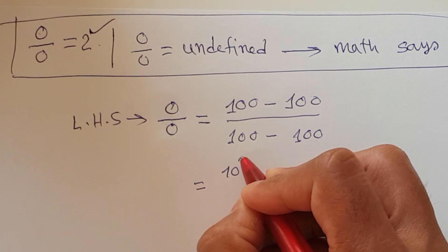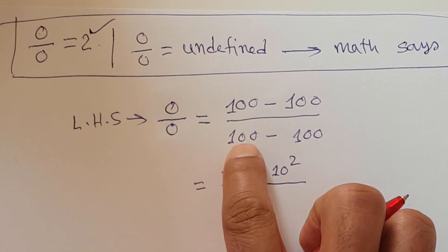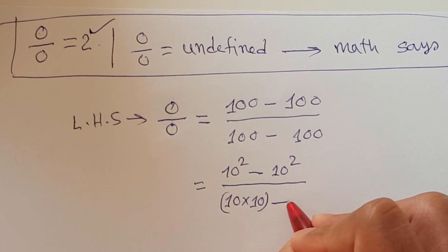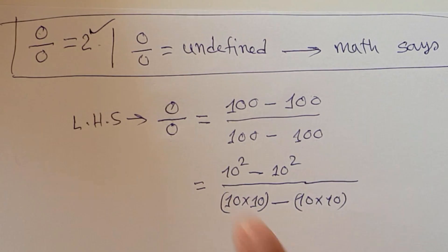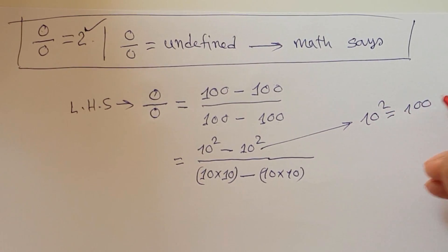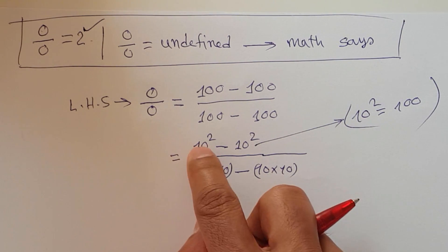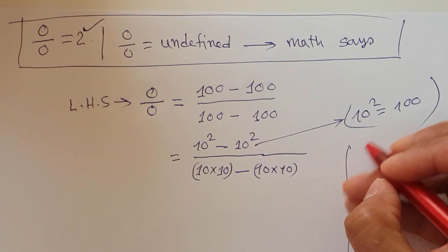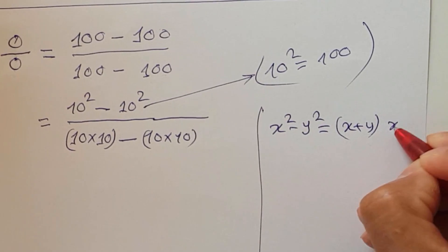I can expand 100 as 10 squared, and again this 100 I can expand as 10 times 10. You know 10 squared equals 100 from your high school mathematics. So look at here: 10 squared minus 10 squared. This is a formula from high school — you know x squared minus y squared equals x plus y times x minus y.